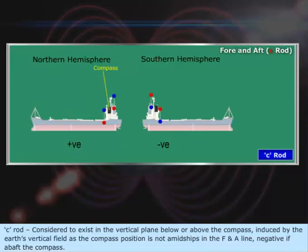C-Rod: Considered to exist in the vertical plane below or above the compass. Negative if continuous.